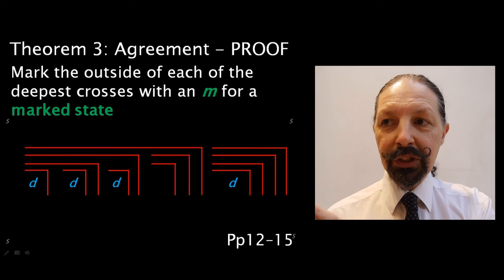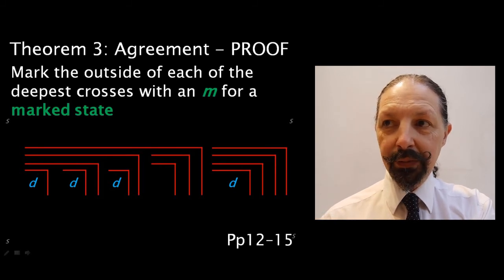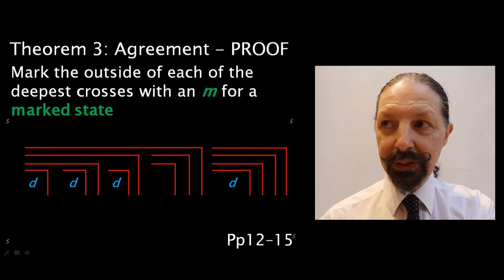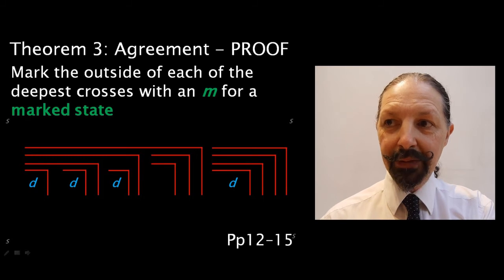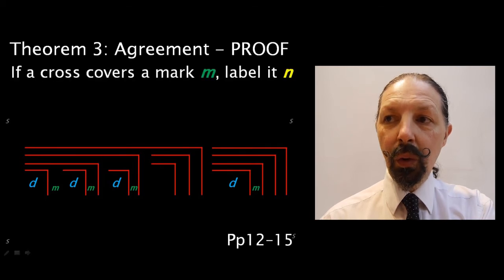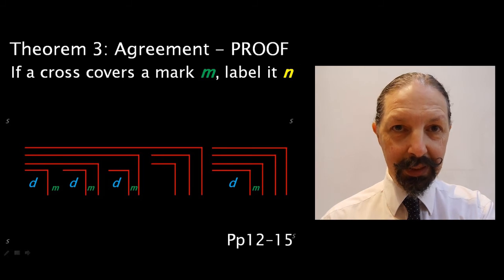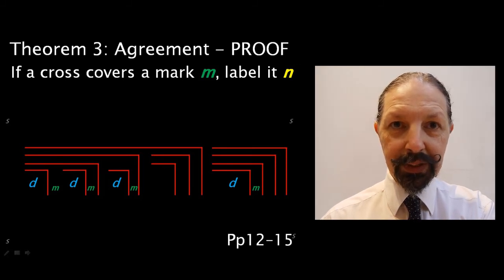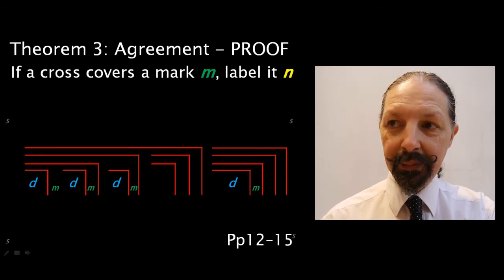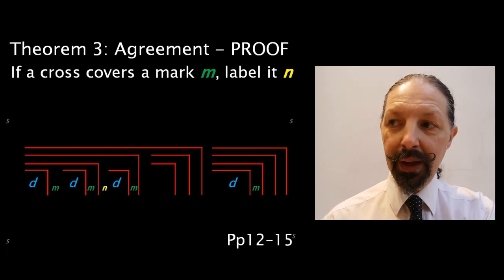Now, we go outside that. So, outside level 4, we're going to mark the outside of each of the deepest crosses with an M for a marked state. And we're going to do that wherever the D appears. Now, we're looking for crosses that cover the mark M. And we're going to label those N. Can you see how many Ns we're going to end up with at this level? Pause the video and see if you can work it out. And then hit the play button again and see whether you agree. So, I have 1, 2, and 3.